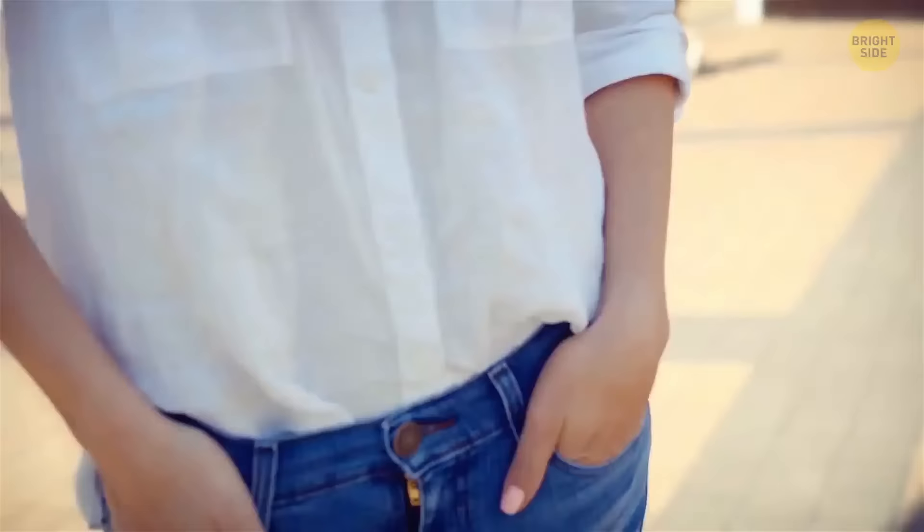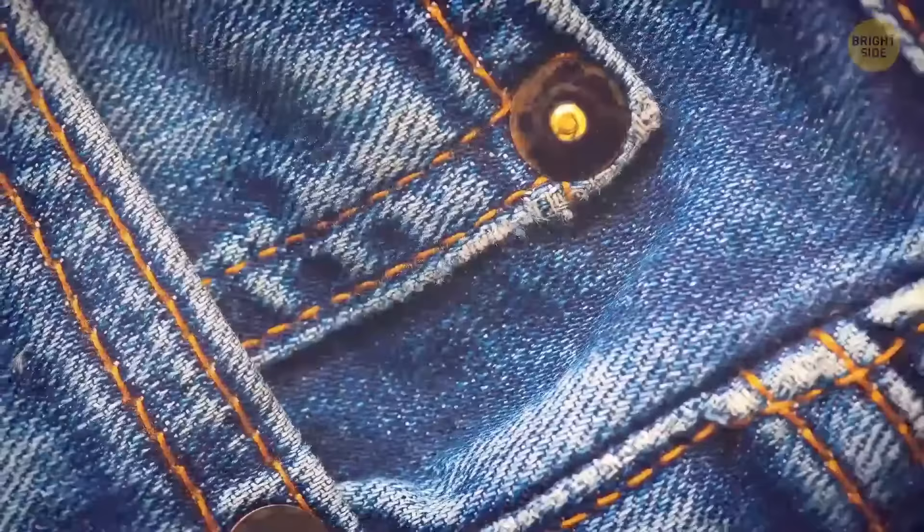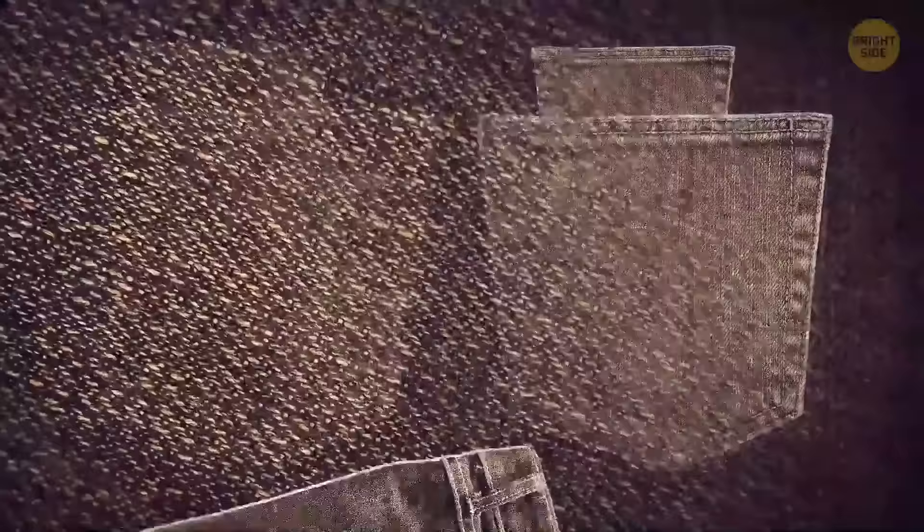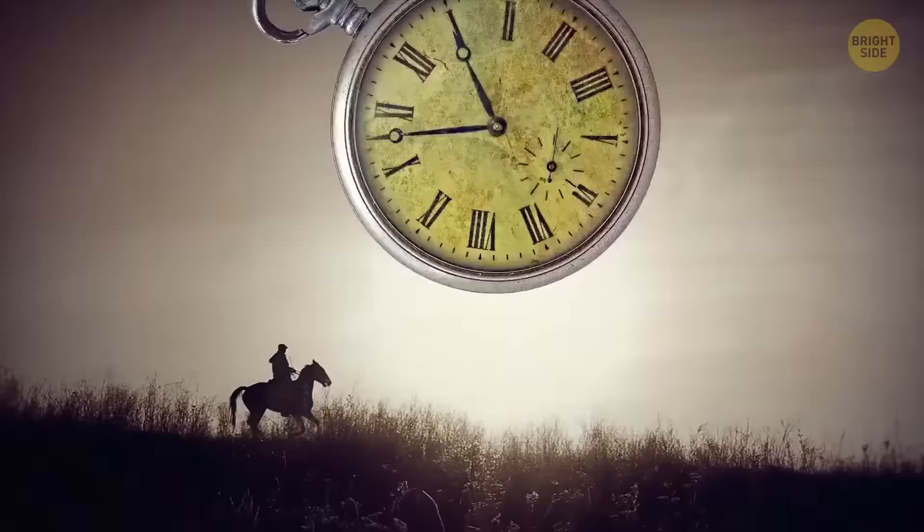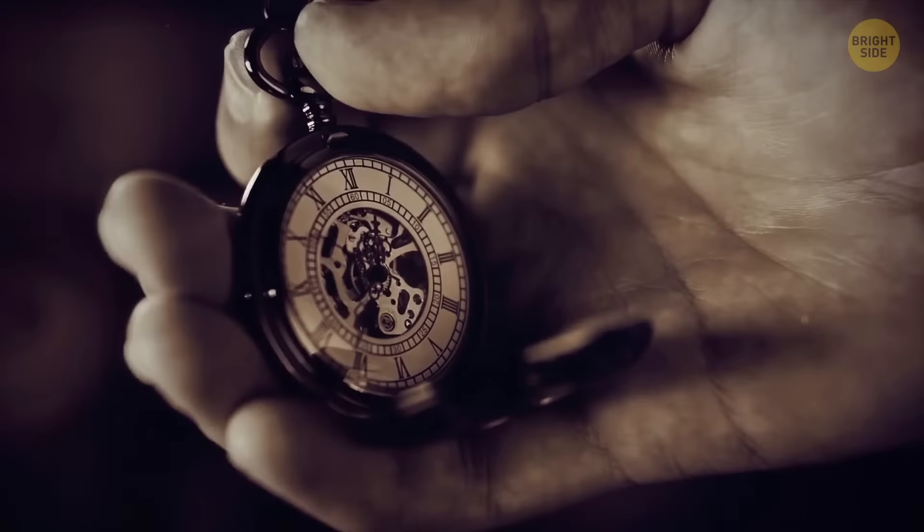What about those metal rivets most jeans have? They're more than a design choice. They were added to protect areas that experience the most strain, such as pocket corners and the base of the fly. The rivets hold the fabric together, even when it's being stretched and pulled during work. And since we're talking about clothing, have you ever wondered about that tiny fifth pocket at the front of your jeans? Well, first of all, it isn't really a fifth pocket. Originally, jeans were made with four pockets, including that little one in front. The fifth pocket is actually the one on the back left, which was only added to jeans in 1901. The little pocket, though, was important a long time ago. Cowboys needed to keep their pocket watches safe while riding out on the range. That pocket kept the watches protected but also handy. And then people became so used to it that jeans just look weird without one.